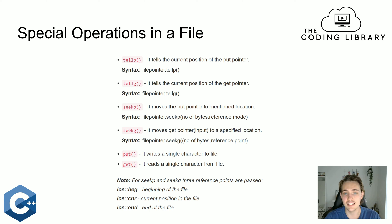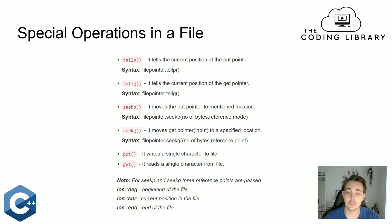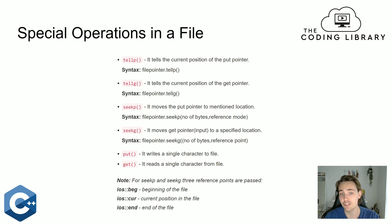We also have some special operations when working with a file. When we've opened a file, we have functions like tellP, which tells the current position of the put pointer, and tellG, which tells the current position of the get pointer. So if we're reading from or writing to a file, we can get the position in the file where we're going to read or write. We can specify a specific point in our file that we either want to read from or write to, which can be really useful for different applications and scenarios.